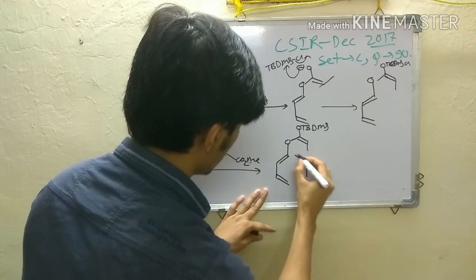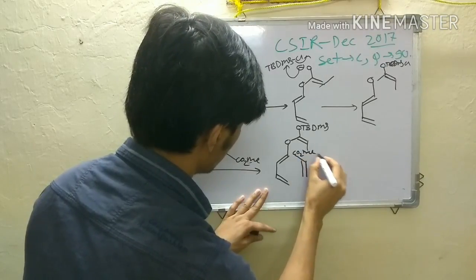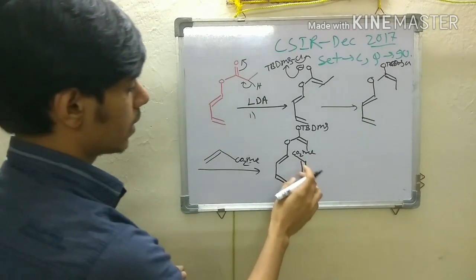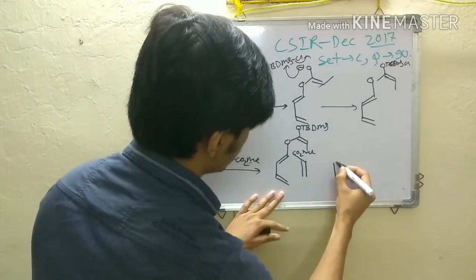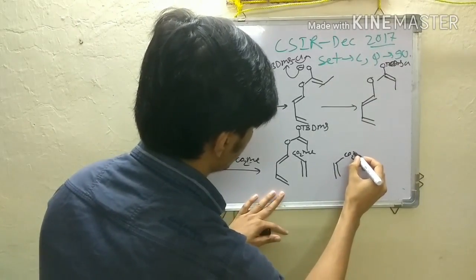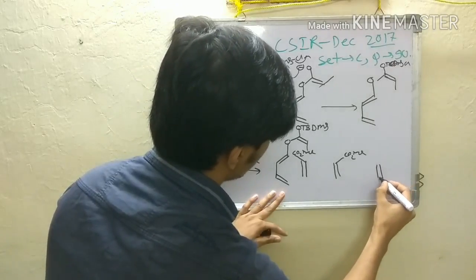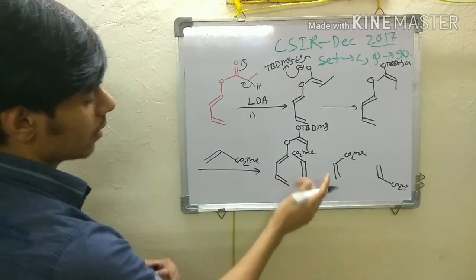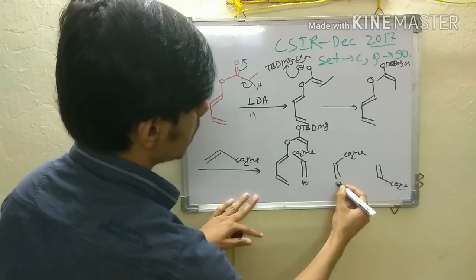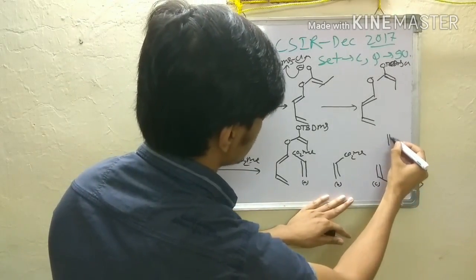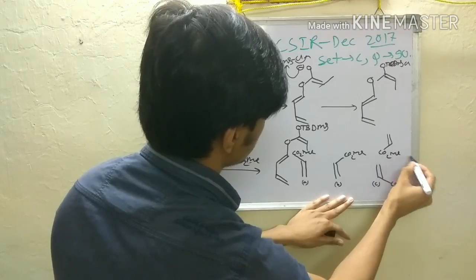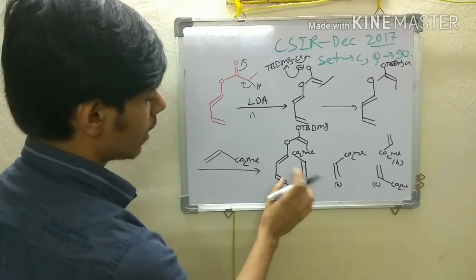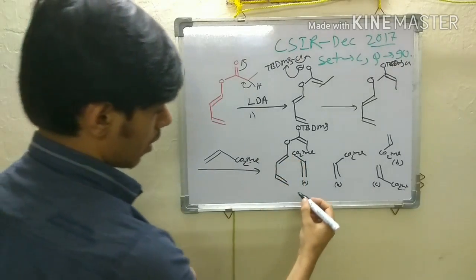For the CO₂Me group on the dienophile, there are four ways you can write the orientation: options A, B, C, and D. So there are four possibilities for writing the dienophile in front of the diene. Among these four, I am choosing a specific one, and I will explain why by considering two key factors.